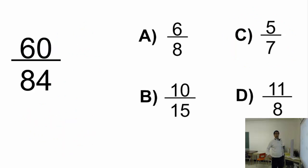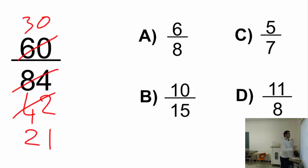Alright, let's continue with another example. 60 divided by 84. Let's just simplify that fraction first. I can divide both of them by 2. Let's start with 2. This is 30, that is 42. And I can still divide them by 2. That will be 21, this will be 15.